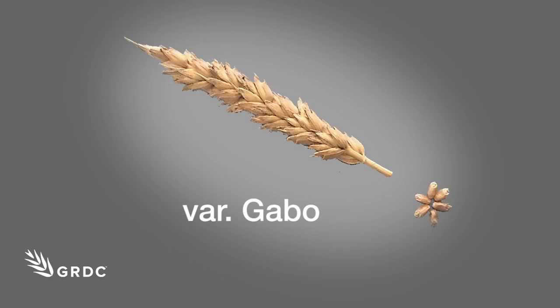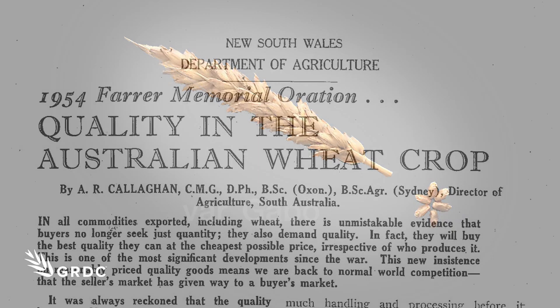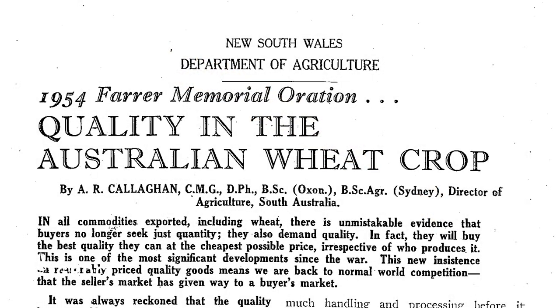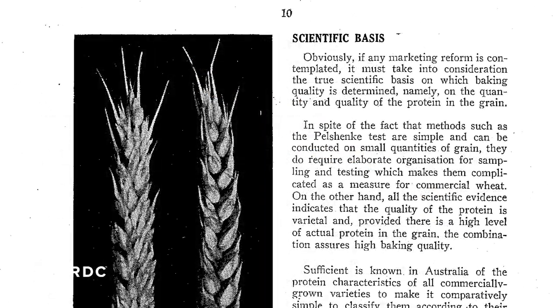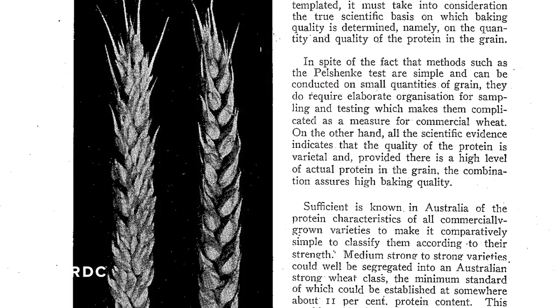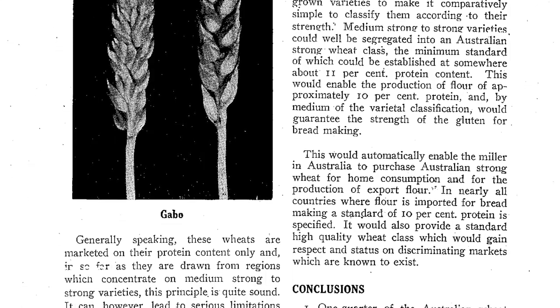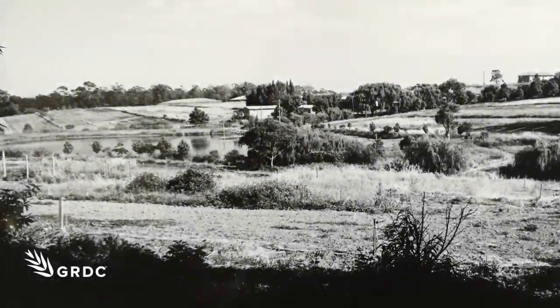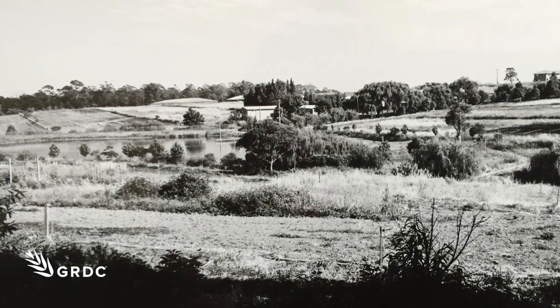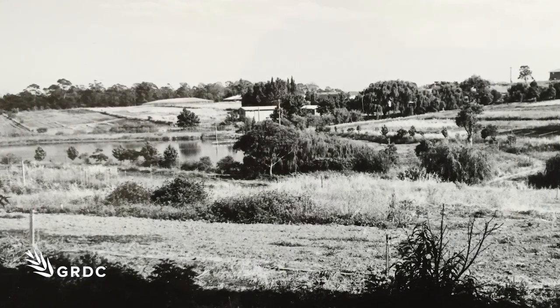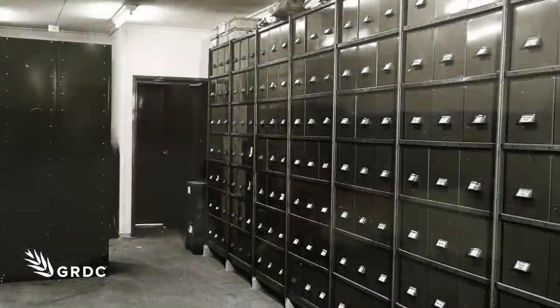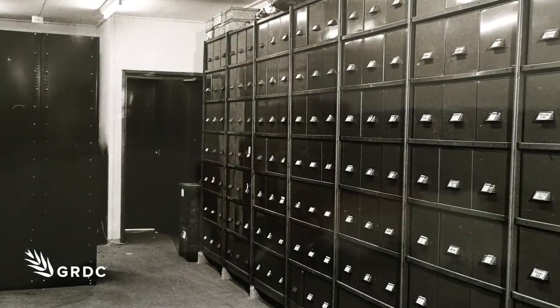Waterhouse was a plant breeder, and his research into rust pathogens raised the bar. Also like Farrar, Waterhouse is remembered for a wheat variety — Gabo, registered in the 1940s — which had good rust resistance, but by the 1950s it had become susceptible to new strains of leaf and stem rust.